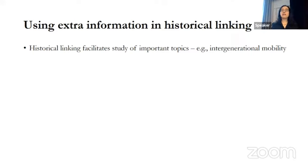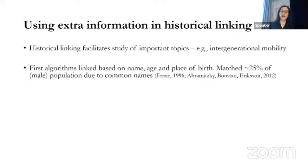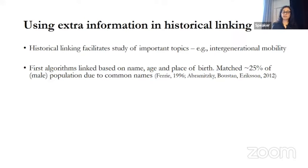The challenge has always been that unlike in modern administrative data sets, we don't have unique personal identifiers like social security numbers to ensure we're following the right person over time. So the first generation of linking algorithms used a very pared-down set of individual attributes consistent over someone's life course: first name, last name, age or implied birth year, and place of birth — state or country. These algorithms can match around a quarter of the male population, and the main reason for non-matches are common names like John Smith.